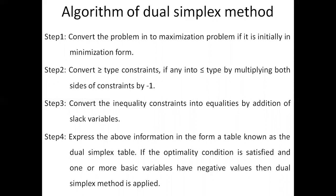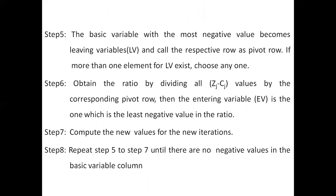In step 4, express the above information in the form of a table known as the dual simplex table. If the optimality condition is satisfied and one or more basic variables have a negative value, then the dual simplex method is applied. In step 5, the basic variable with the most negative value becomes the leaving variable and its respective row is called the pivot row.